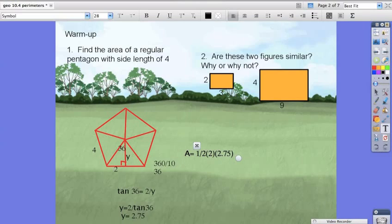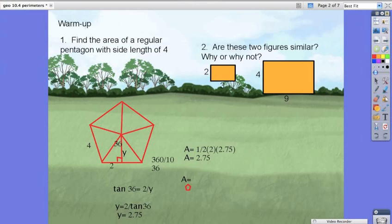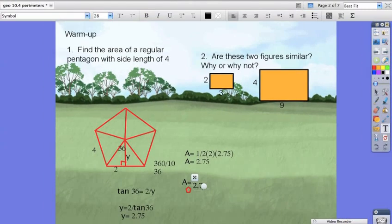And that will give us the area of one of our right triangles, which the area of that right triangle then is 2.75. Now because we have ten right triangles, we'll get 2.75 times ten, and that's equal to 27.5.